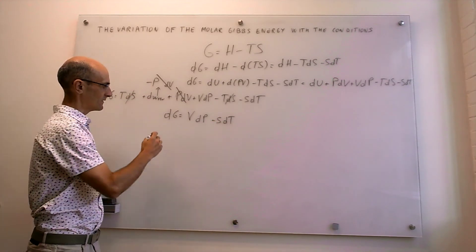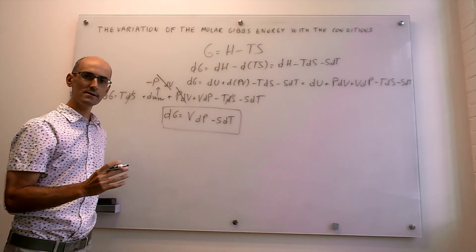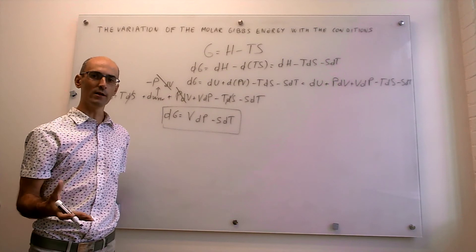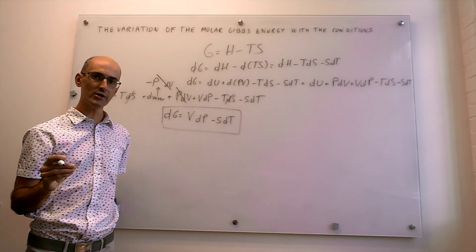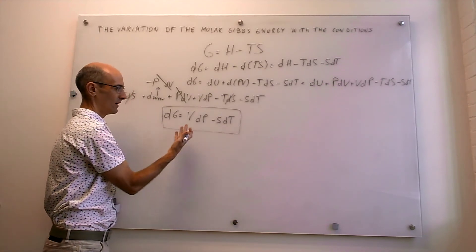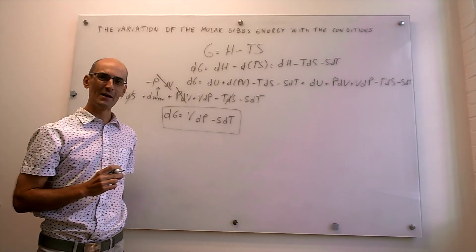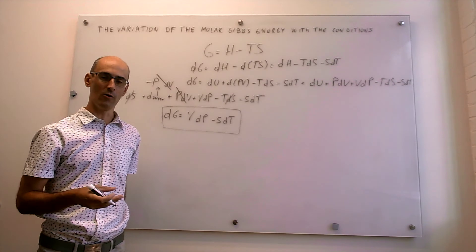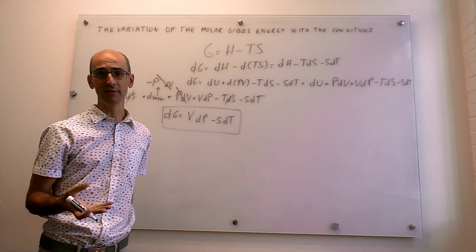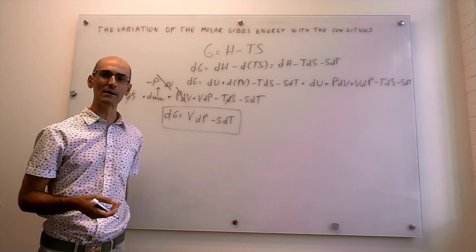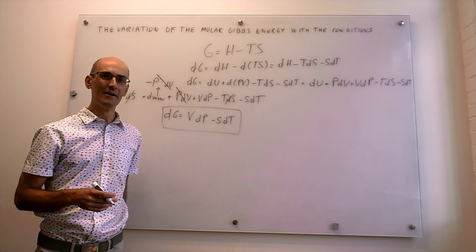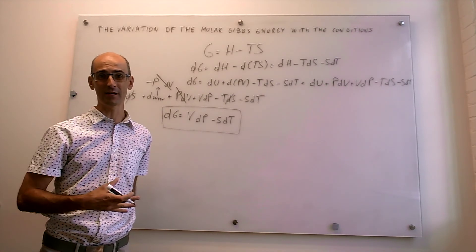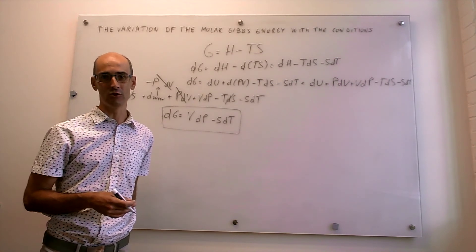This is a very important expression because it gives the dependence of the Gibbs energy on the conditions. After all the derivation, we find that the Gibbs energy depends exclusively on pressure and temperature. This is really useful because pressure and temperature are easy to control in the laboratory — it's easy to heat or cool a sample, and changing pressure can be done with specialized equipment. This means we can actually control the value of the Gibbs energy using these two variables.